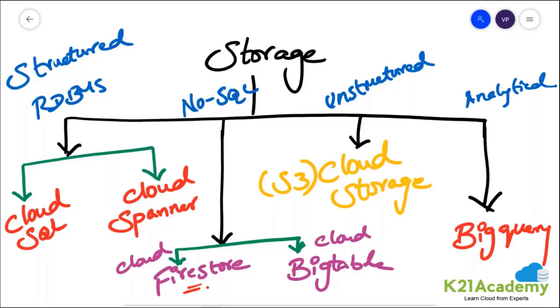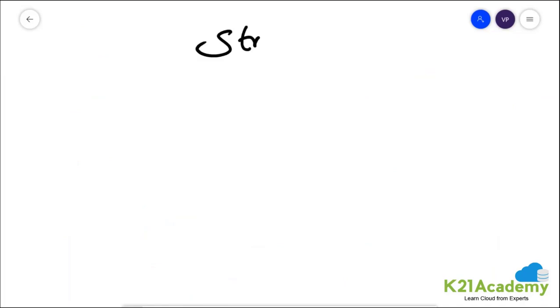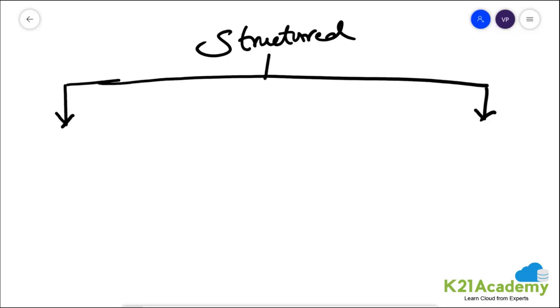First we'll talk in detail about structured RDBMS data, then slowly we'll get into the next option. Now we'll talk about structured databases. For structured data, there are two offerings from Google Cloud Platform.